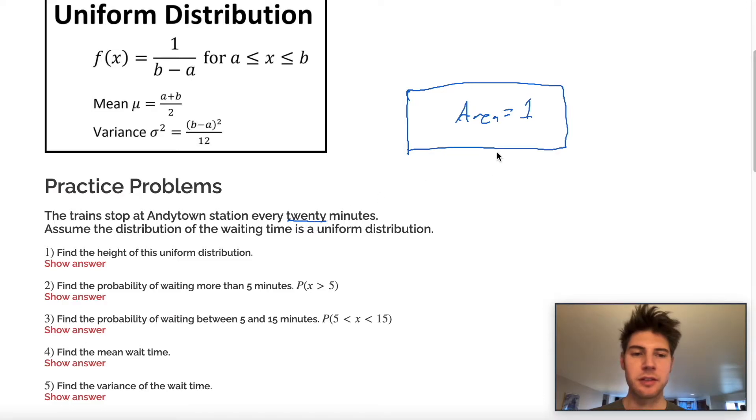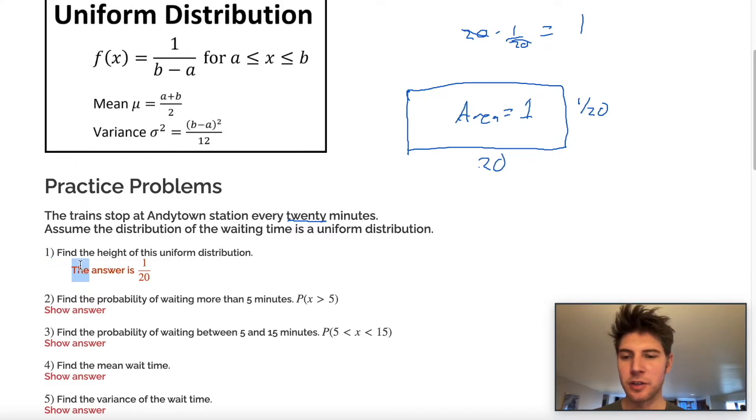If it's every 20 minutes, our base, our bottom is going to be 20, which means that our height of the uniform distribution needs to be one over 20 because 20 times one over 20 is equal to one because those cancel and you get one. So the answer to the first one, when it says find the height of uniform distribution, the answer is going to be one over 20. And this is the reason why.